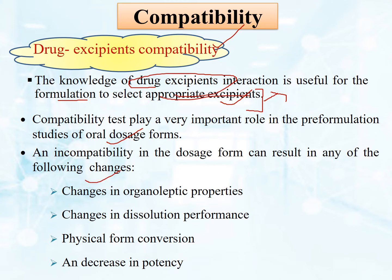Incompatibility in the dosage form can result in various changes. If any dosage form has drug-excipient incompatibility, many changes occur. These include: change in organoleptic properties, changes in dissolution preference, physical form conversion, and decrease in potency. These are the following changes we can see in any type of dosage form when compatibility is not maintained.